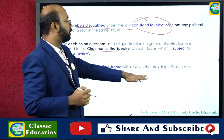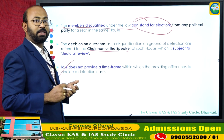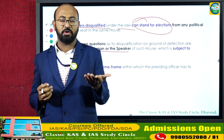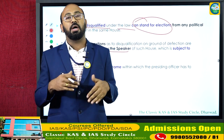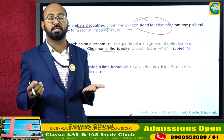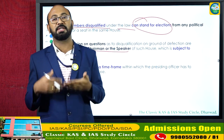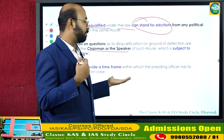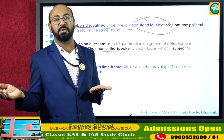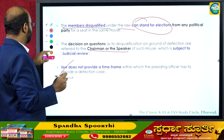One grave issue with the law is that it does not provide a time frame within which the presiding officer must decide a defection case. The Speaker can take any length of time — even five or six years — before taking action. There are cases where the term of the assembly has expired before a decision was taken. This is a serious gap in the anti-defection law.